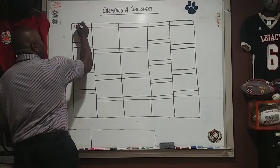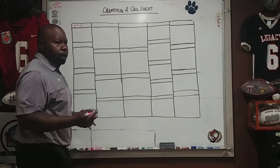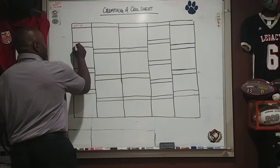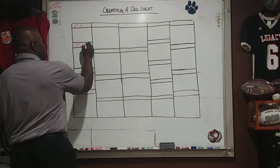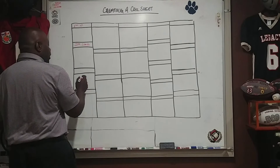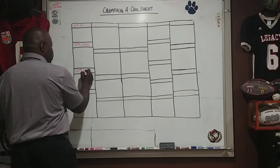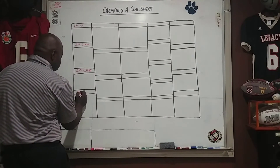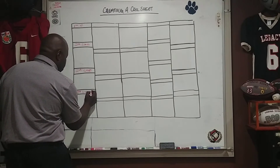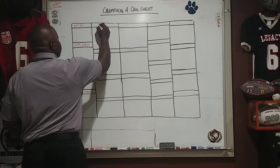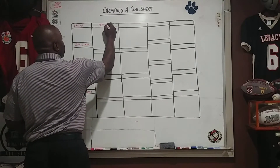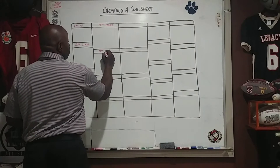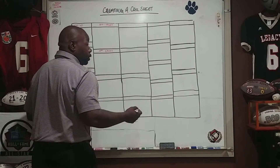I know what plays I want throughout the week — I've thought about it, we've worked on our plays, I know what I want. So first and ten, I put my plays there. Another column: second and long. Second and short. Third and long. Third and short. Fourth and short — because you don't really have to play fourth down much; we know we're going to punt the ball.